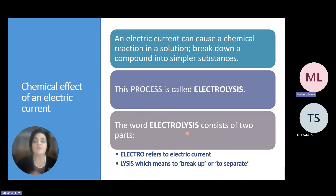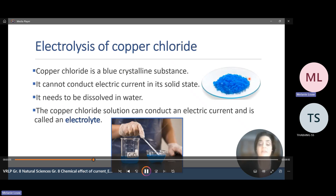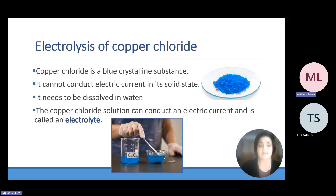Let's look at the word electrolysis. It can be broken down into two parts: 'electro', which refers to electric current, and 'lysis', which means to break up or to separate. So electrolysis means that by using an electric current, you can break down a compound. Copper chloride is a blue crystalline substance and cannot conduct electric current in its solid state — that is why we need to dissolve it in water. The copper chloride solution can conduct electric current, and that solution is called the electrolyte.